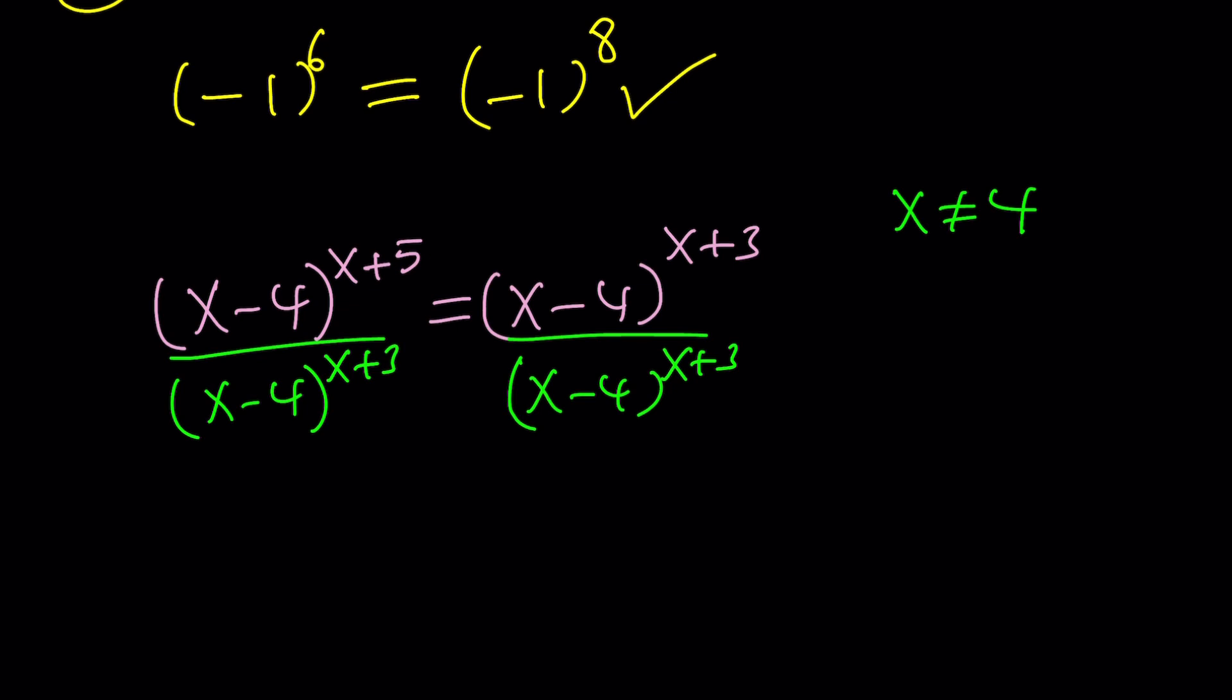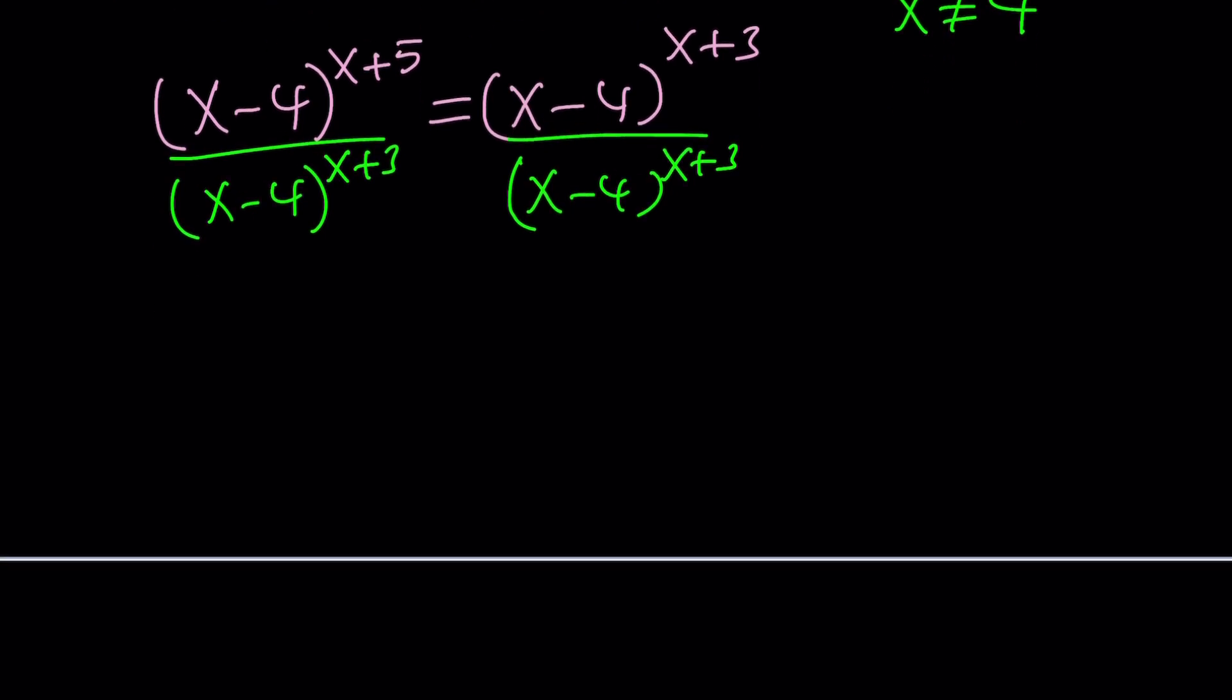Because we already covered that, right? I mean, x equals 4 is a solution for sure. We know it. Let's just say, let's look for solutions for which x does not equal 4. Okay? So, we can do this division. But when you divide, something interesting happens because we have the same base. So, we can subtract the exponents. And when we do subtract the exponents, we get 2. And on the right-hand side, we get 1. Nice.